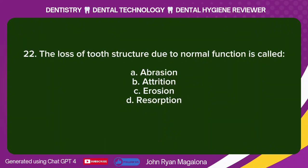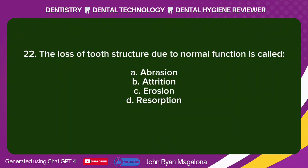Question 22: The loss of tooth structure due to normal function is called: A. Abrasion. B. Attrition. C. Erosion. D. Resorption. Answer: B. Attrition.